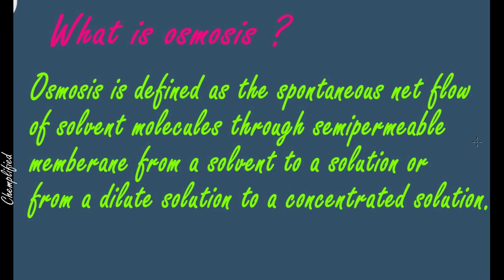Now what happens in osmosis? Osmosis is defined as the spontaneous net flow of solvent molecules. This is where we differentiate between osmosis and diffusion — in osmosis, the net movement that takes place is of the molecules of solvent. The solvent molecules will move; solute molecules will not move through the membrane.